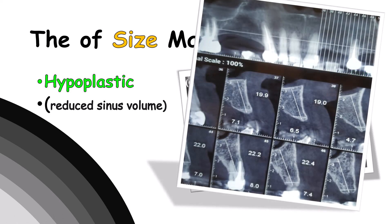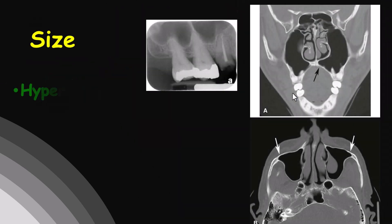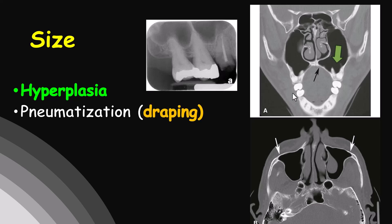But in these cases, if the sinus floor is too high — or superiorly positioned — the length for the implant is measured from the crest to the nasal floor. On the other hand, the size of the sinus can be bigger; this is called a hyperplastic sinus.